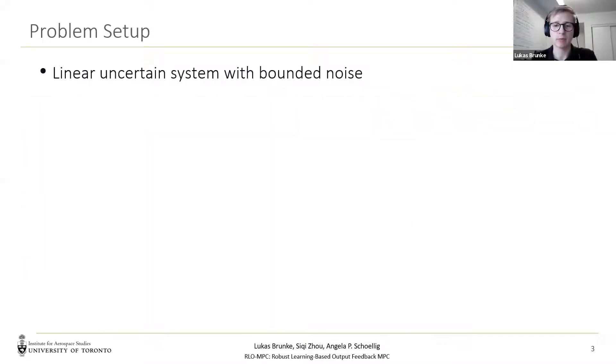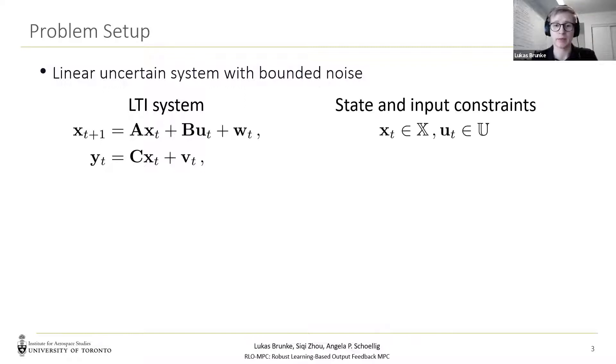In our problem formulation, we consider an uncertain LTI system. The state is X, the control input is U, the output is Y, and the process noise is W, and the measurement noise is V. We also consider polytopic state and input constraints, for example, to stop a robot from colliding with the wall and to account for actuation limits. The process noise and measurement noise are both polytopic sets, such that the noise is bounded.